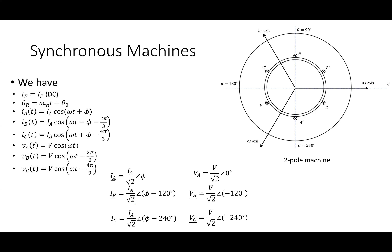The DC current goes into the field coil in the rotor, and in the stator we have three balanced three-phase currents. The power factor angle phi is defined as the angle between the voltage and the current. If we're using this as a generator, we take phases A, B, and C and hook them up to a balanced three-phase set of voltages — connecting the generator to a grid where the generator pushes its current into the grid.